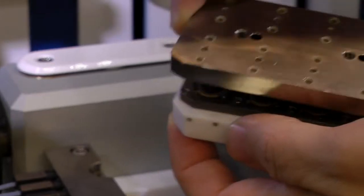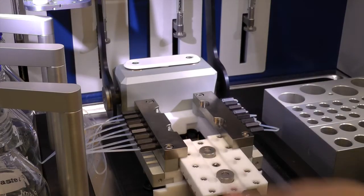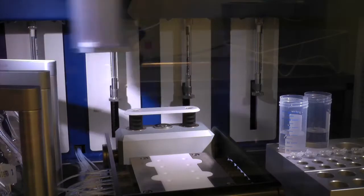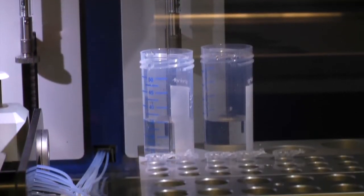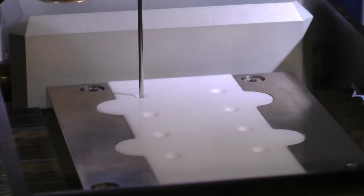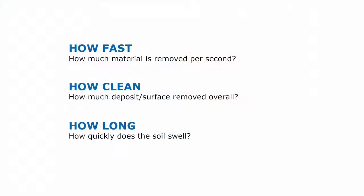BioLin Scientific have put together a solution that gives you multiple answers in one go, and we call that the cleaning profile. The cleaning profile is like a fingerprint for how your formulation or surfactant interacts with a specific soil. It consists of three key parameters: the removal rate, the total removal, and the soil swelling. These three parameters tell you how fast your soil is removed, how much is removed before and after, and how long the soil removal takes — so in the fingerprint: how fast, how much, and how long.